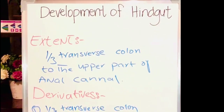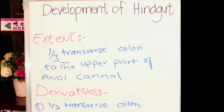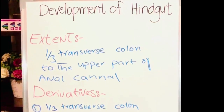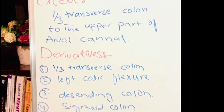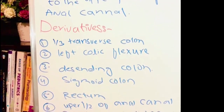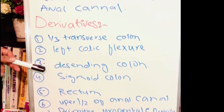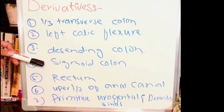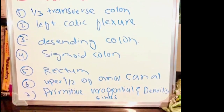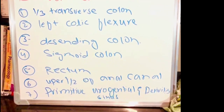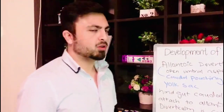The blood supply to the hindgut is by the inferior mesenteric artery. The derivatives of the hindgut are: the left one-third of the transverse colon, the left colic flexure, the descending colon, the sigmoid colon, the rectum, the upper one-third of the anal canal, and the primitive urogenital sinus.